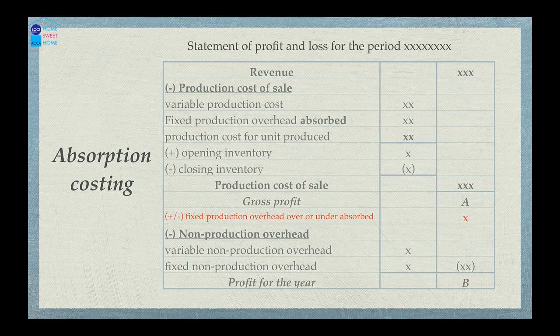Opening inventory and closing inventory — considering variable and fixed costs — give us the full production cost. We use the opening inventory multiplied by the full production cost per unit, minus the closing inventory multiplied by the full production cost per unit, to arrive at the production cost of sales. Then we have revenue minus production cost of sales to get the gross profit.